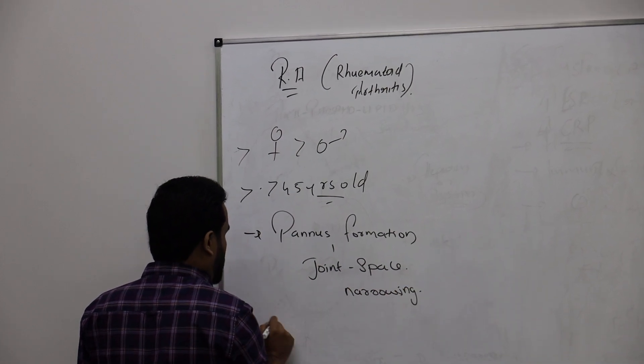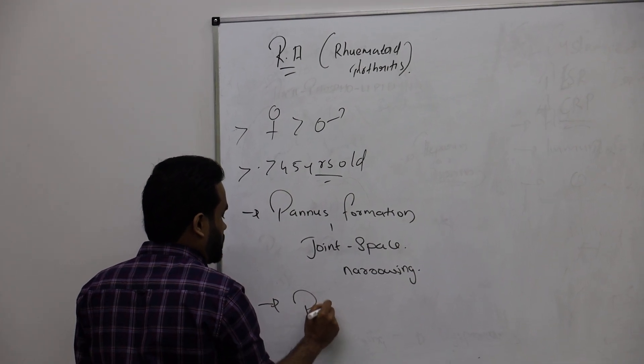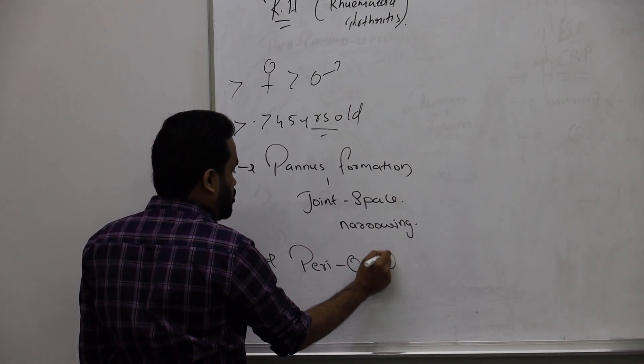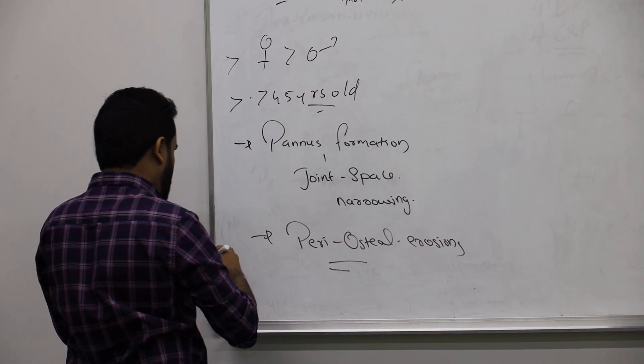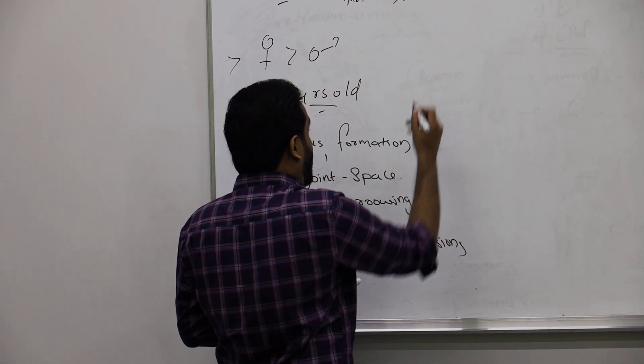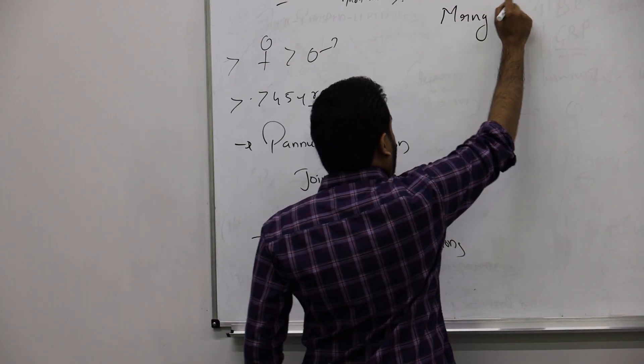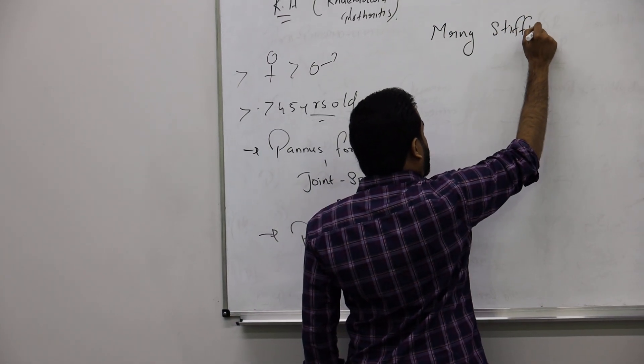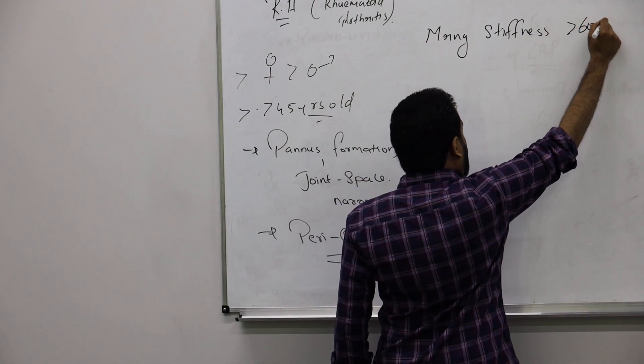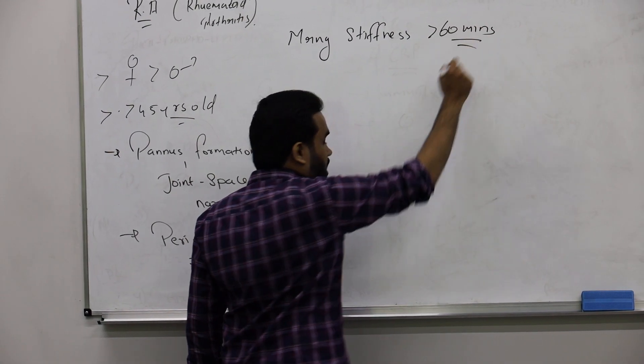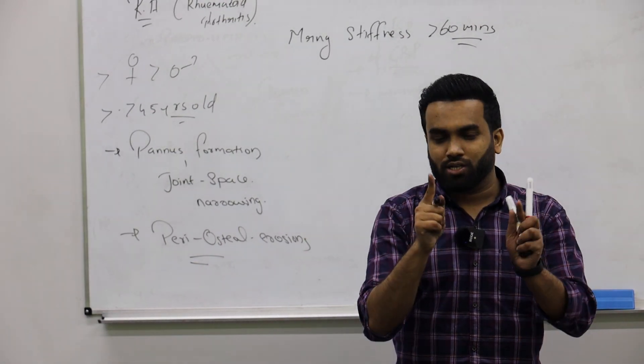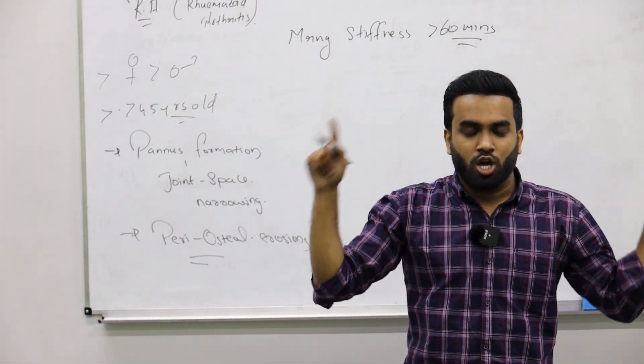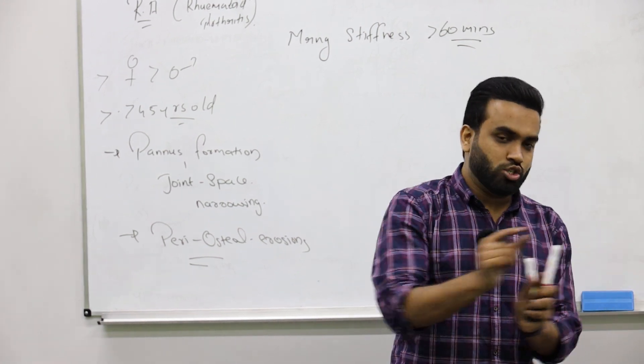Periosteal erosions are a typical feature. The patient will have morning stiffness, pain in the joint mainly at morning that will prolong till more than 60 minutes. Remember, if they give you morning stiffness only for 30 minutes or more than half an hour, it's osteoarthritis. More than 60 minutes is rheumatoid. More than 30 is osteo, more than 60, more than one hour, is rheumatoid.